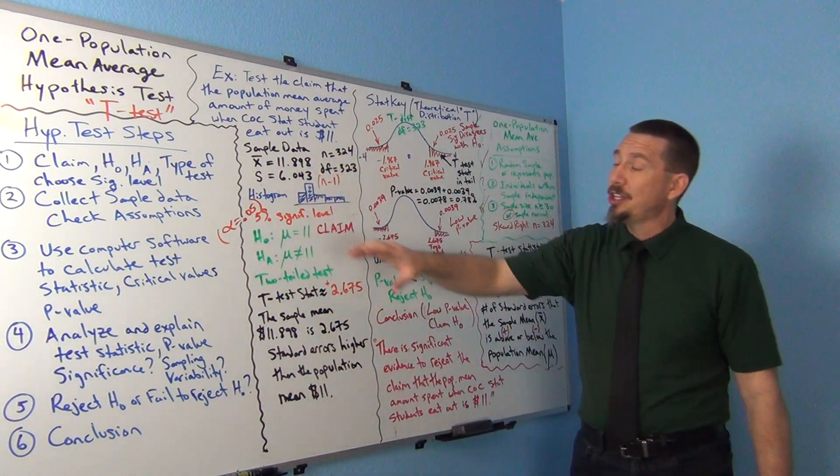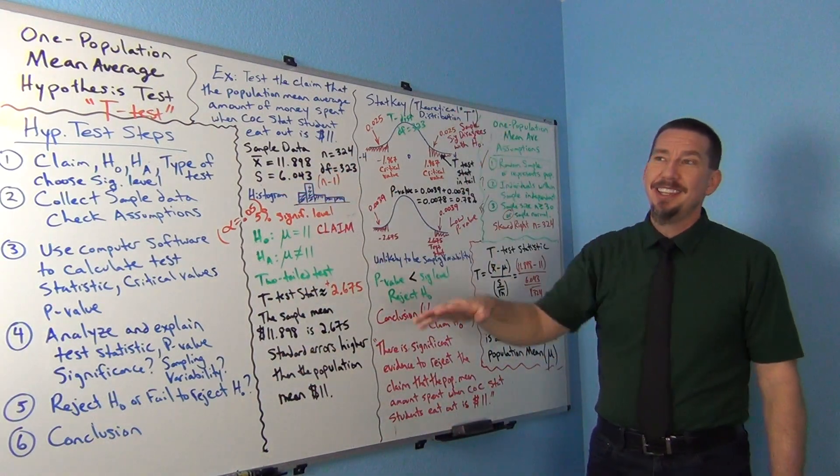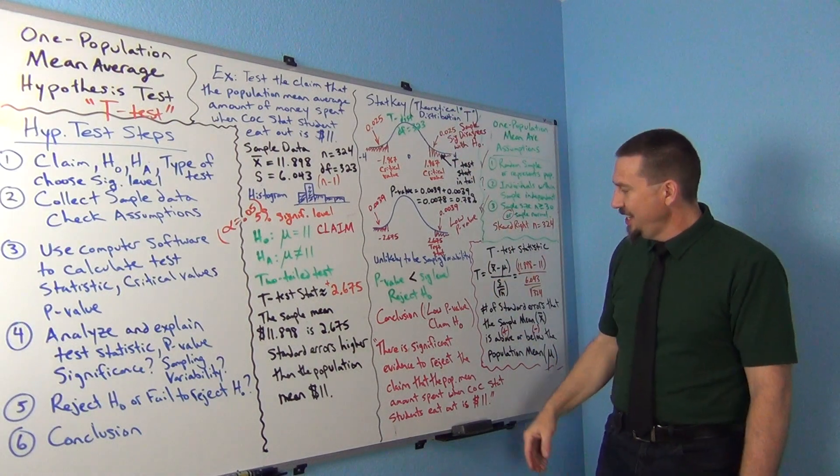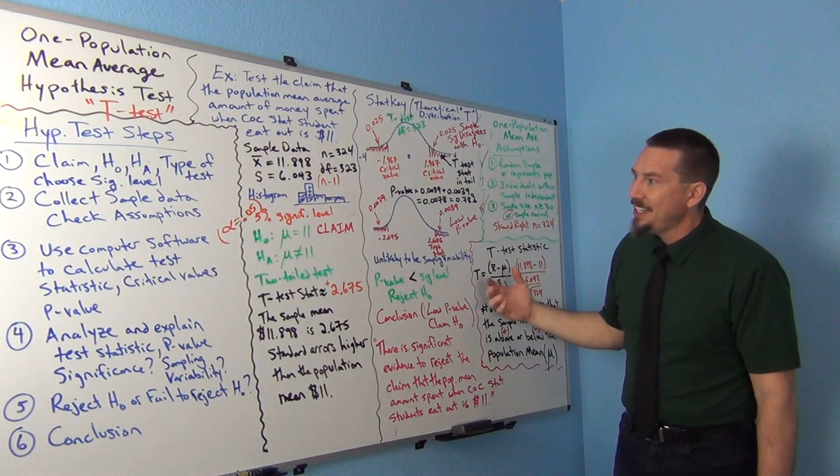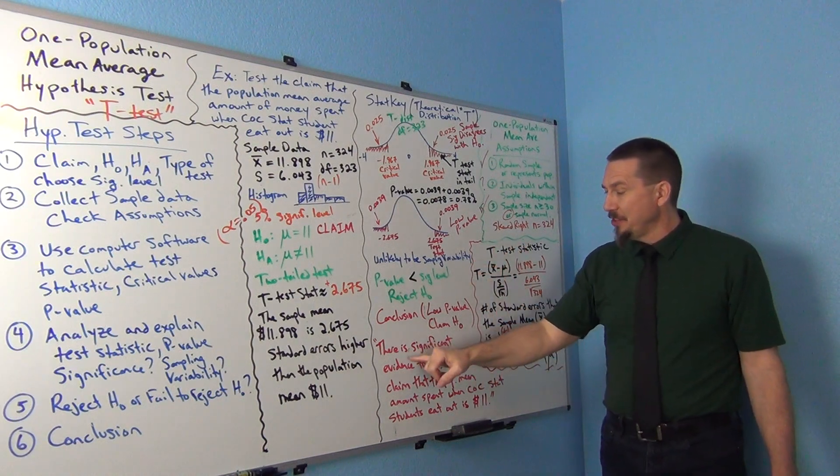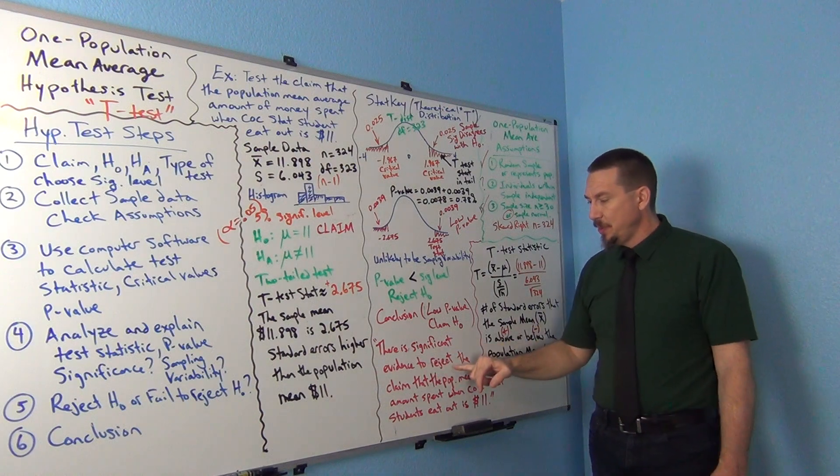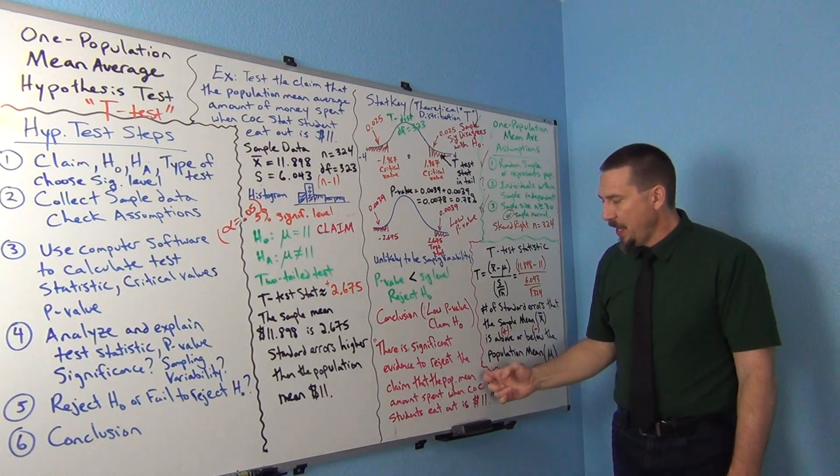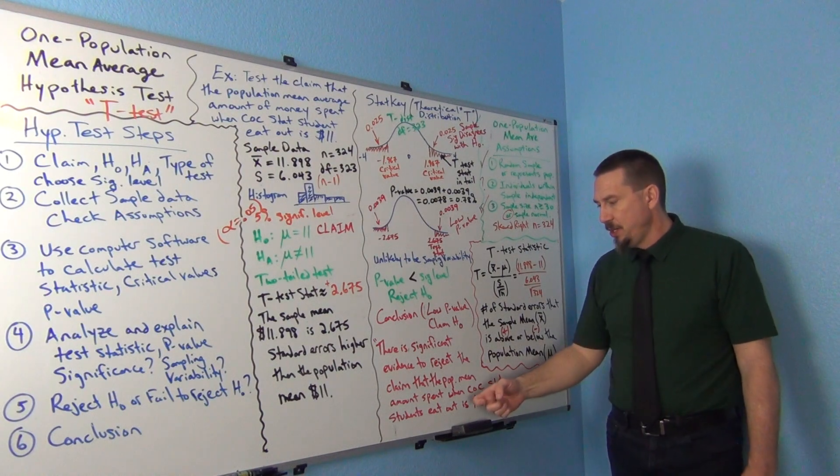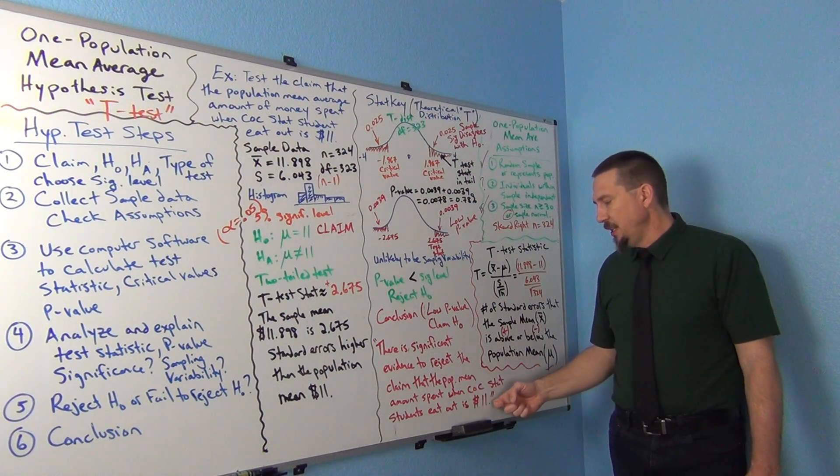If you go back to our conclusion video when we had the little table for how to write your conclusions, you can kind of see that that is what you want to say. You want to say there is significant evidence to reject the claim that the population mean amount spent by COC STATS students when they eat out is $11.